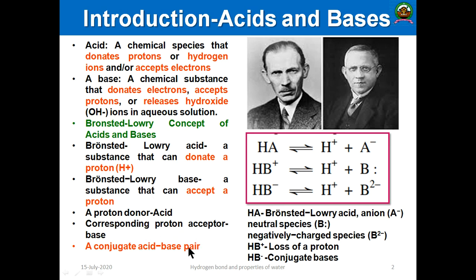A base is nothing but the conjugate base pair of an acid. Here you can see the two great scientists — Lowry and Bronsted — who proposed this concept. An acid HA dissociates to form its conjugate base A minus and a proton H plus.